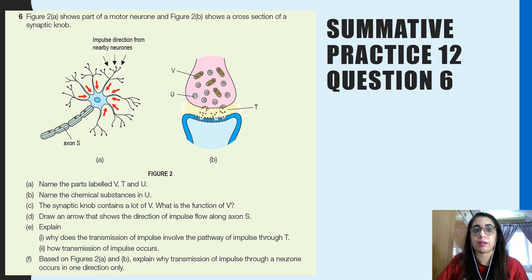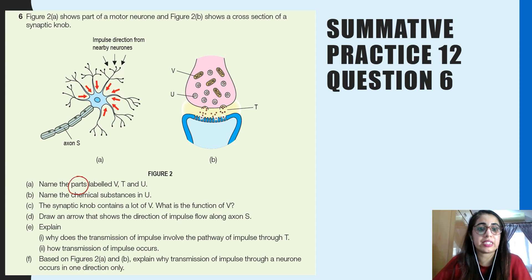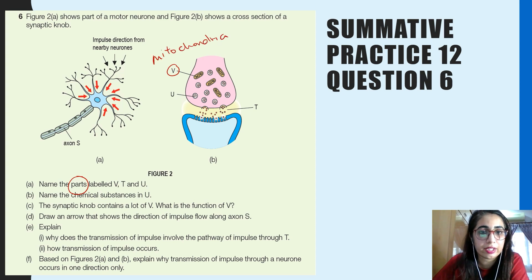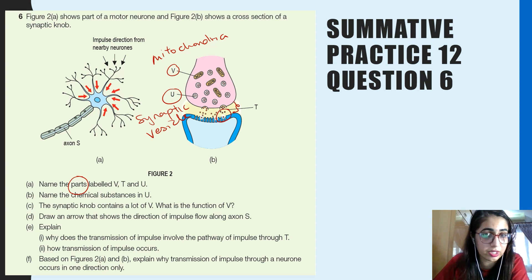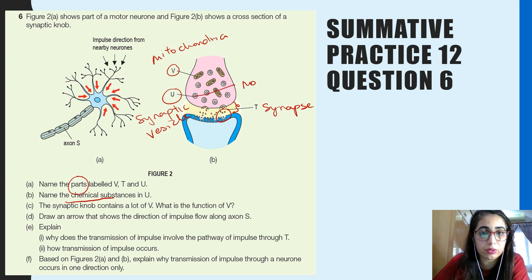Looking at Summative Practice 12, Question 6: Figure 2a shows a part of a motor neuron and 2b shows a cross-section of a synaptic knob. Name parts V, T, and U: V is mitochondria, U is synaptic vesicles, and T is the synapse. The chemical substance in U — the synaptic vesicles — is the neurotransmitter. Examples include dopamine and serotonin.